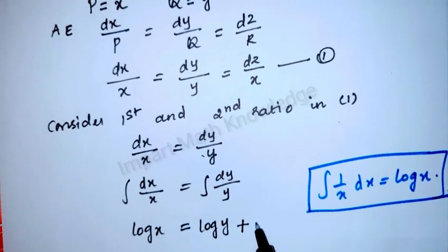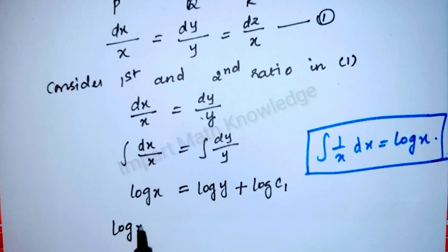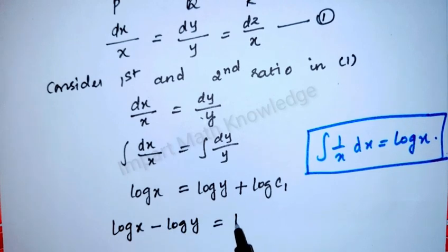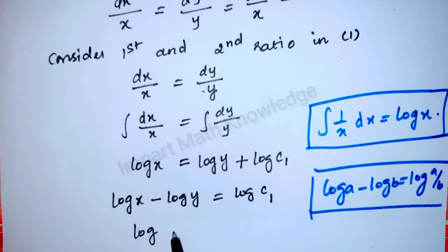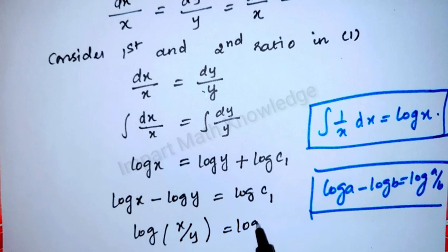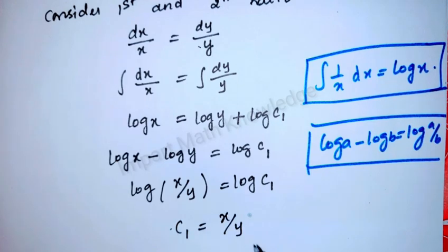The constant term is log c. Taking log y to the left-hand side: log x − log y = log c. We know that log a − log b = log(a/b), so this can be written as log(x/y) = log c1. Cancelling log on both sides, we get c1 = x/y.